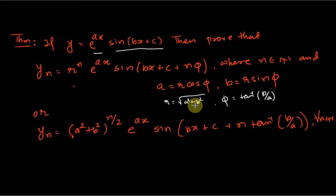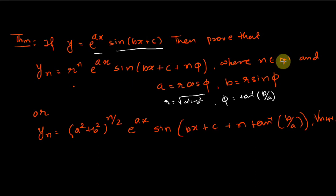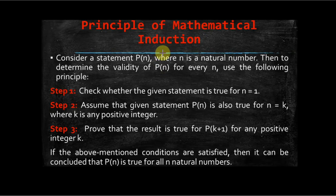If you substitute the values of r and φ, the expression can also be written in an alternative form. Our objective is to prove this statement. Since the statement is true for any natural number n, we will use the principle of mathematical induction. Let us recall what PMI is.